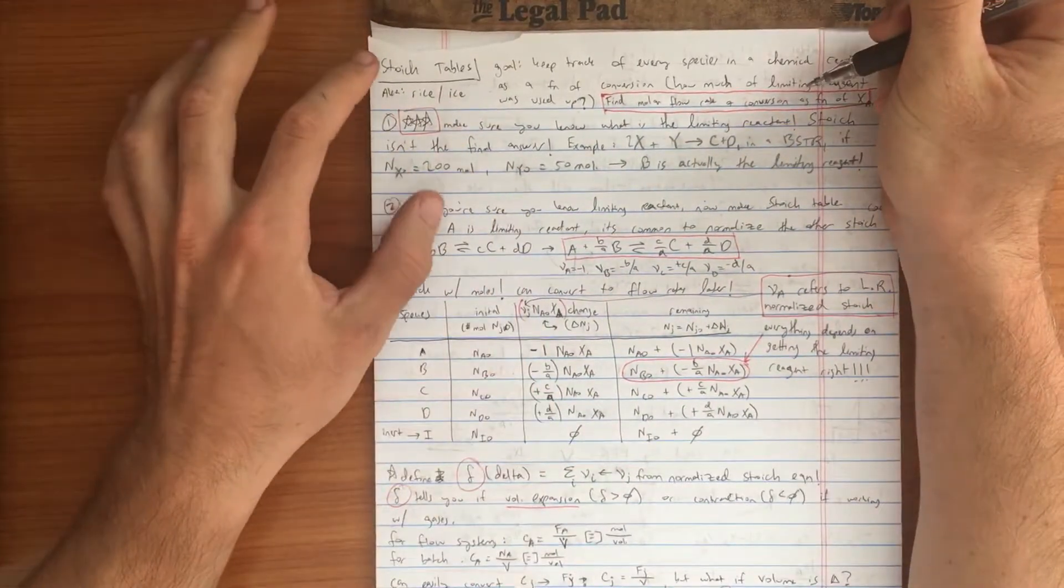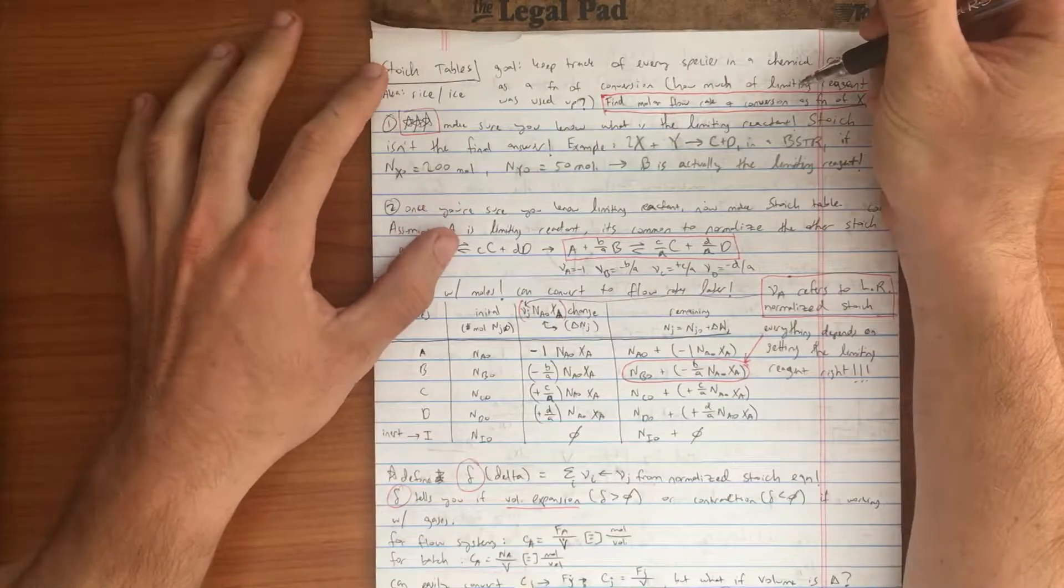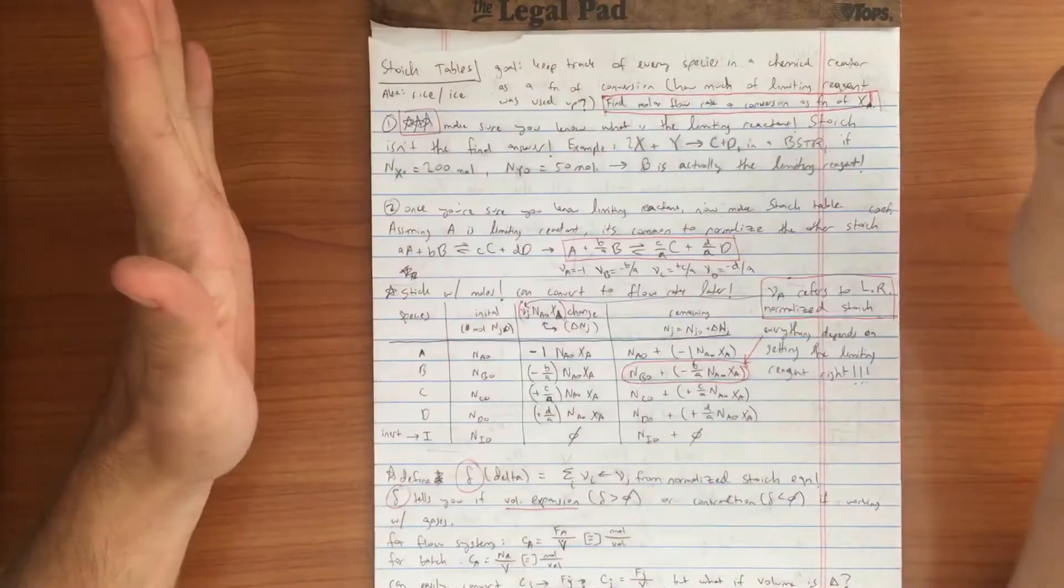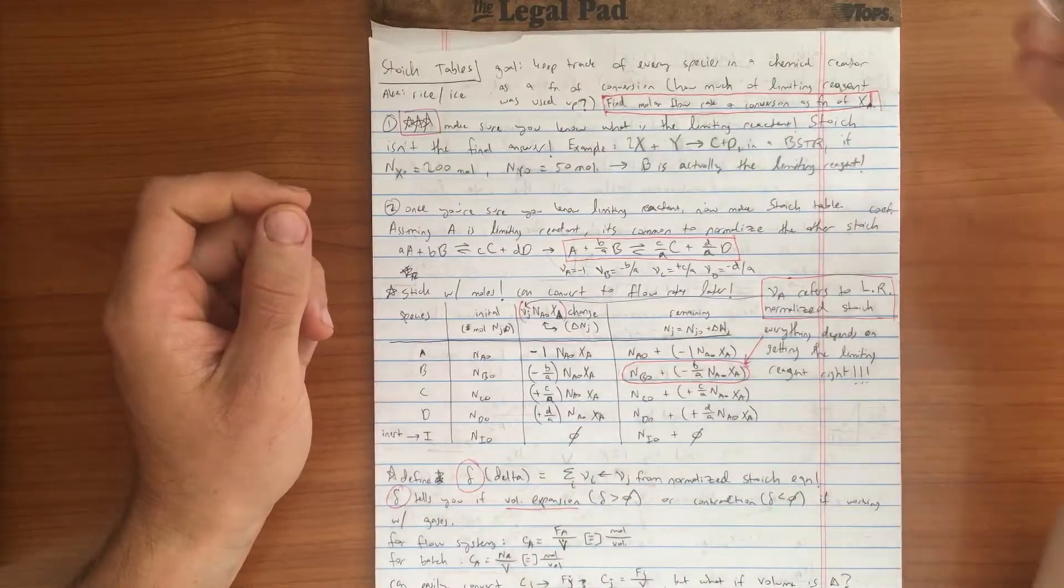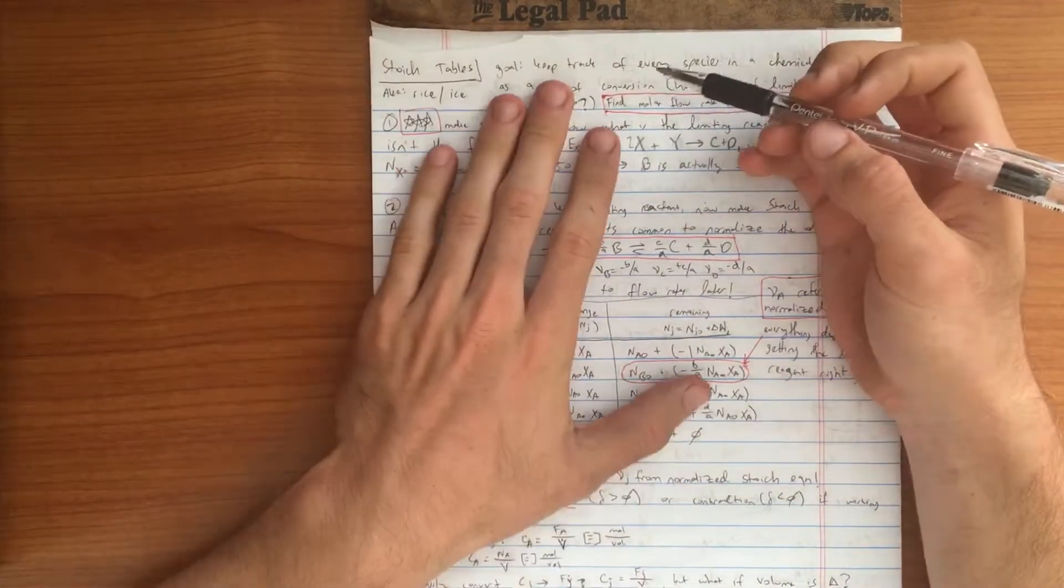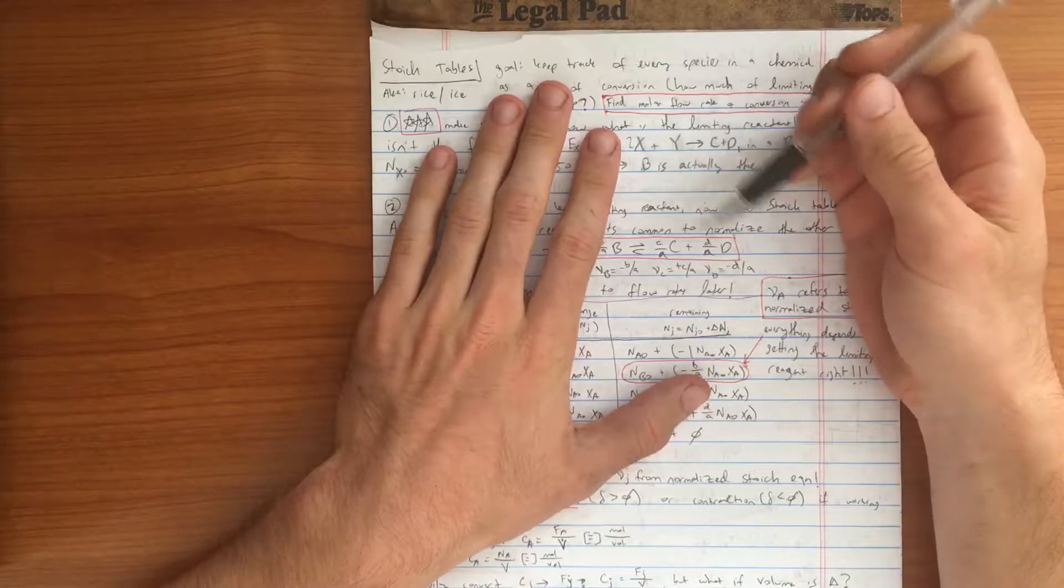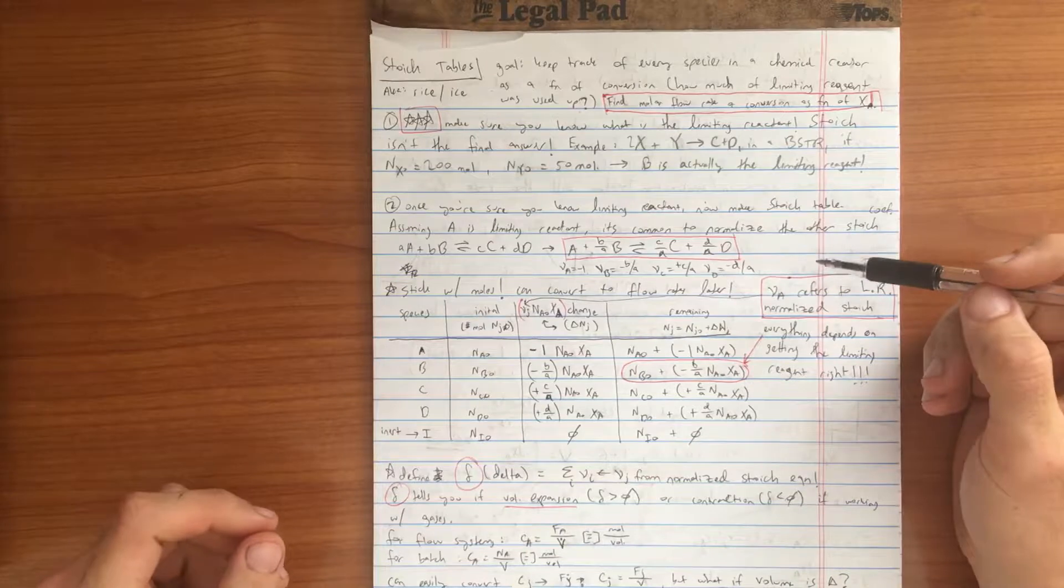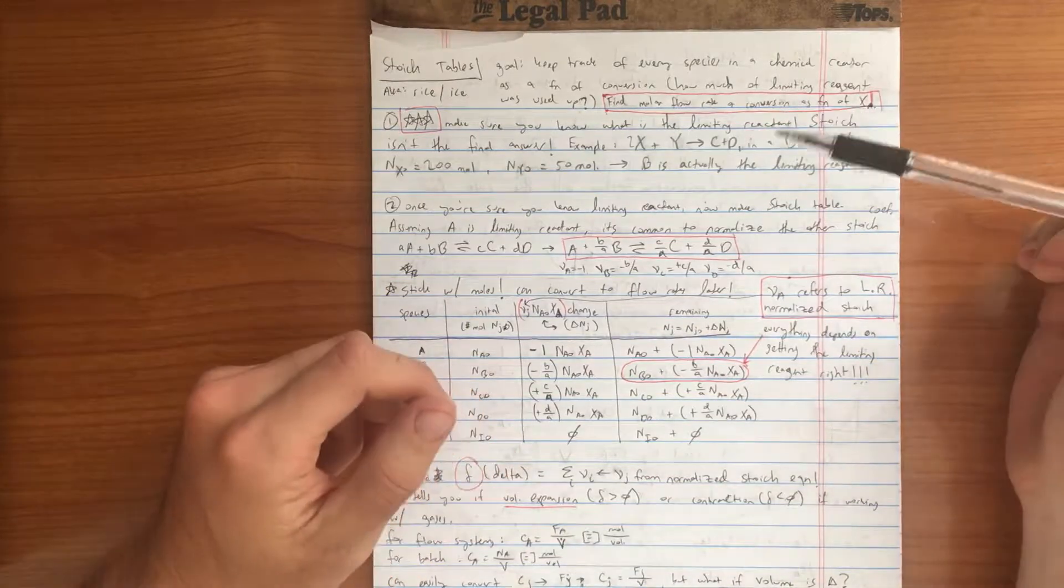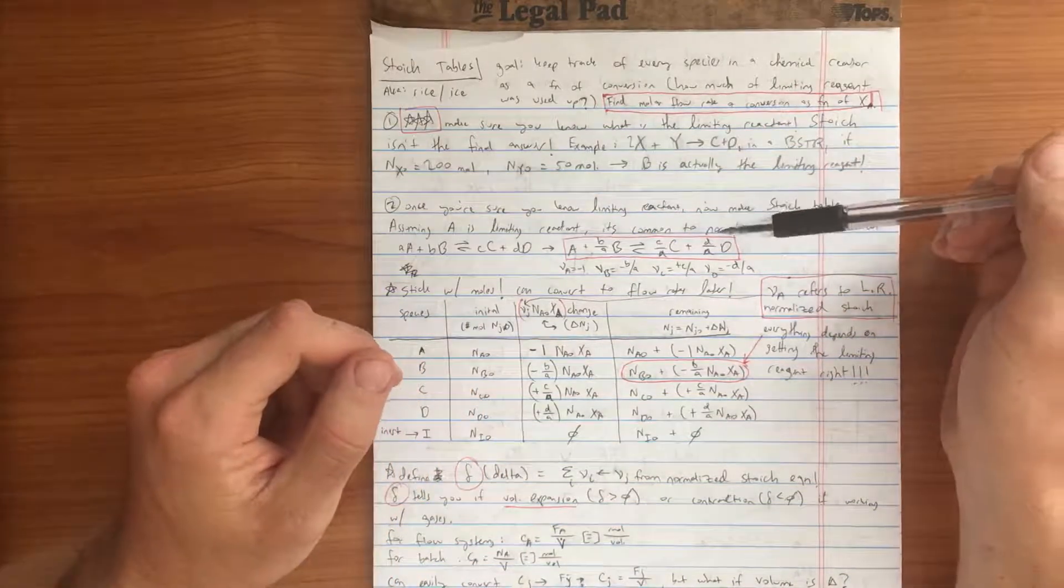Stoichiometric tables are used by chemical engineers to keep track of every species as a function of the conversion. This is a very important tool to have, especially when you have a huge reactor and you have many species present and you need to know the reaction conditions at a certain point in the reactor.